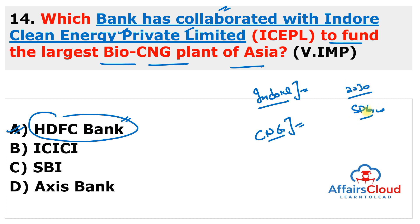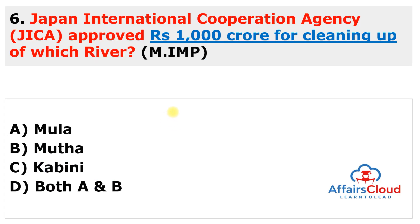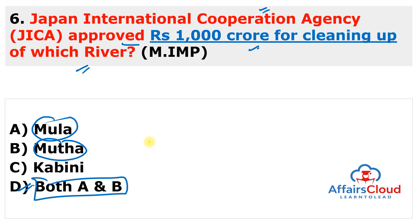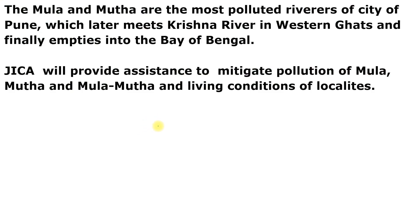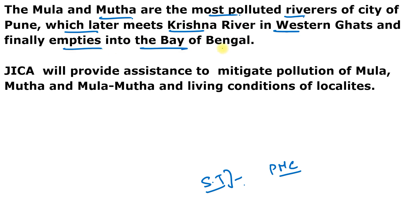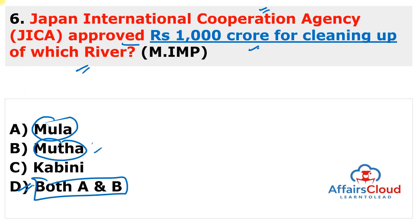Japan International Cooperation Agency (JICA) approved ₹1000 crore for the cleanup of which rivers? The answer is both Mula and Mutha rivers — options A and B — in the Pune Municipal Corporation area. JICA gave the green signal for Pune's ₹1000 crore river cleanup project. The main objective is to improve water quality by augmenting the sewage collection system, sewage treatment facilities, and improving sanitation. The Mula and Mutha are among the most polluted rivers in Pune, which later meet the Krishna River in the Western Ghats and finally empty into the Bay of Bengal.